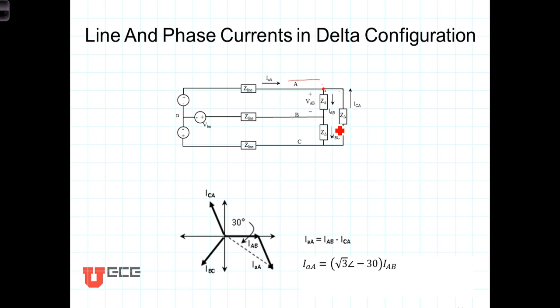You have I sub BC going from the B node to the C node. That's the phase current going through this phase winding. And you have I sub CA, which is the current going from the C node to the A node, going through this winding.